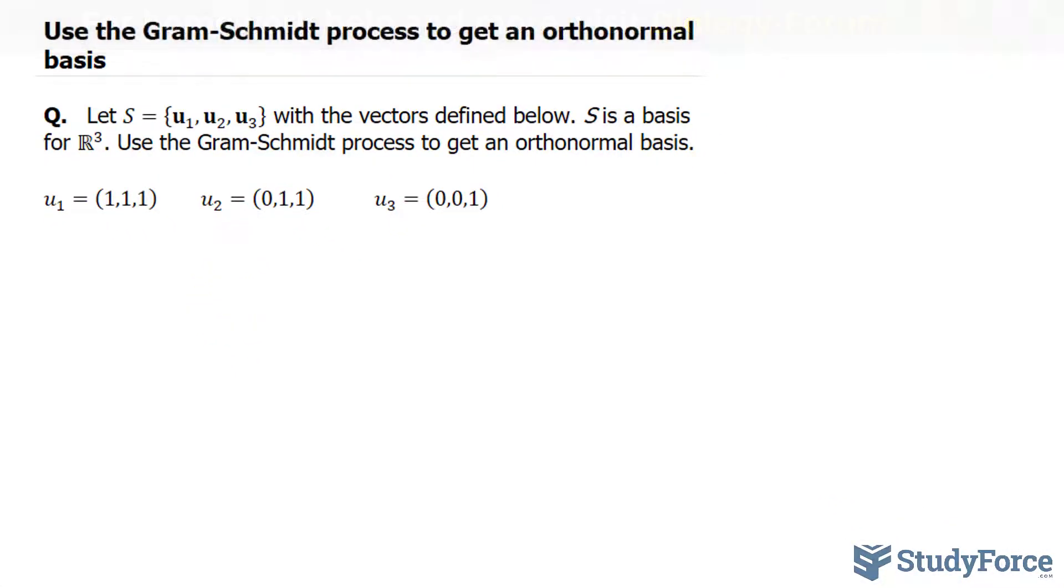The first thing that you want to do is set one of these vectors equal to V1. So I'll set U1 equal to V1. So technically, V1 has the components 1, 1, and 1.